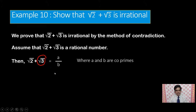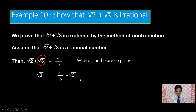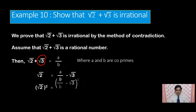After transposing, we get square root of 2 equals a by b minus square root of 3. Now we square both sides: square root of 2 whole square equals a by b minus square root of 3 whole square.